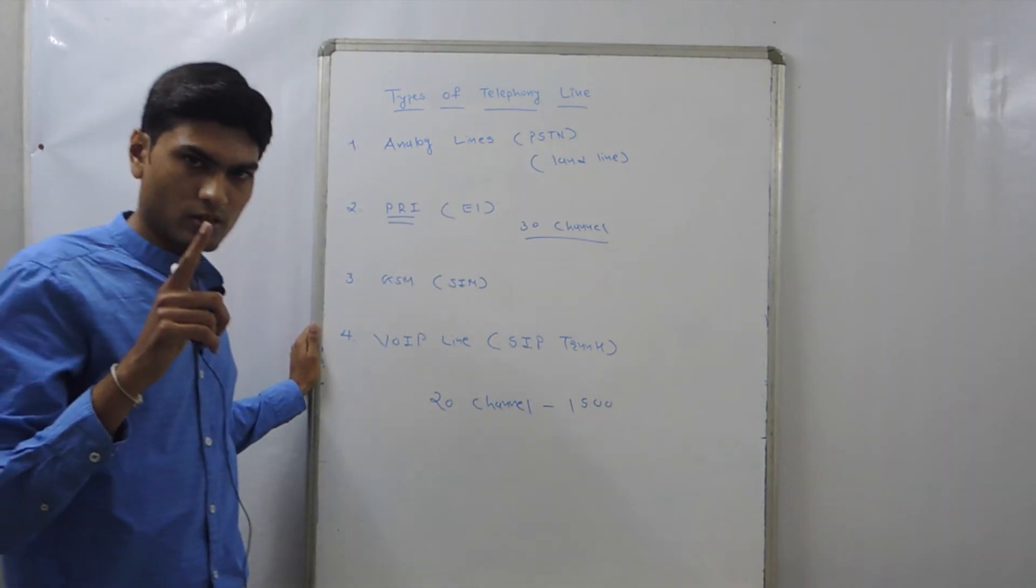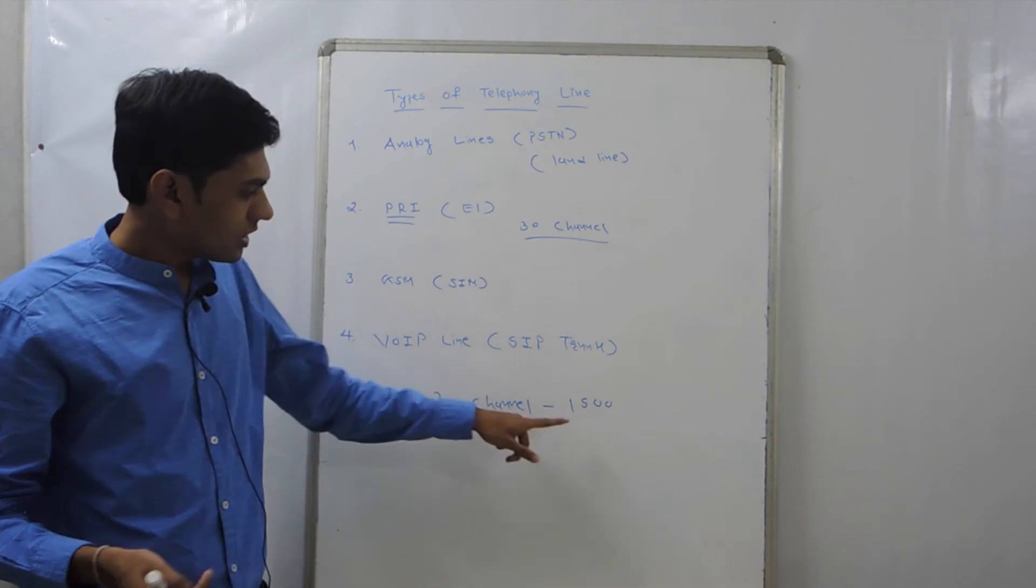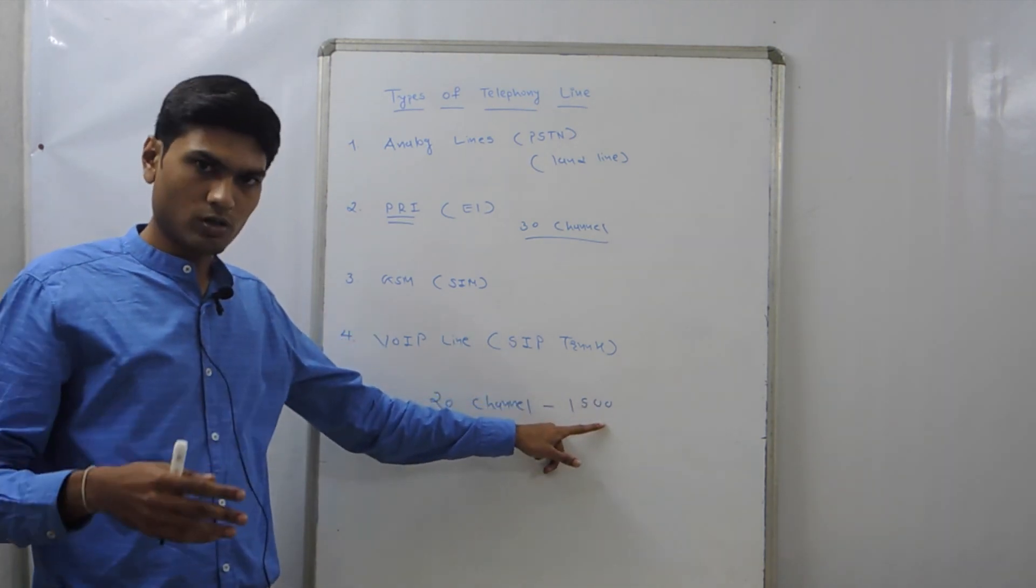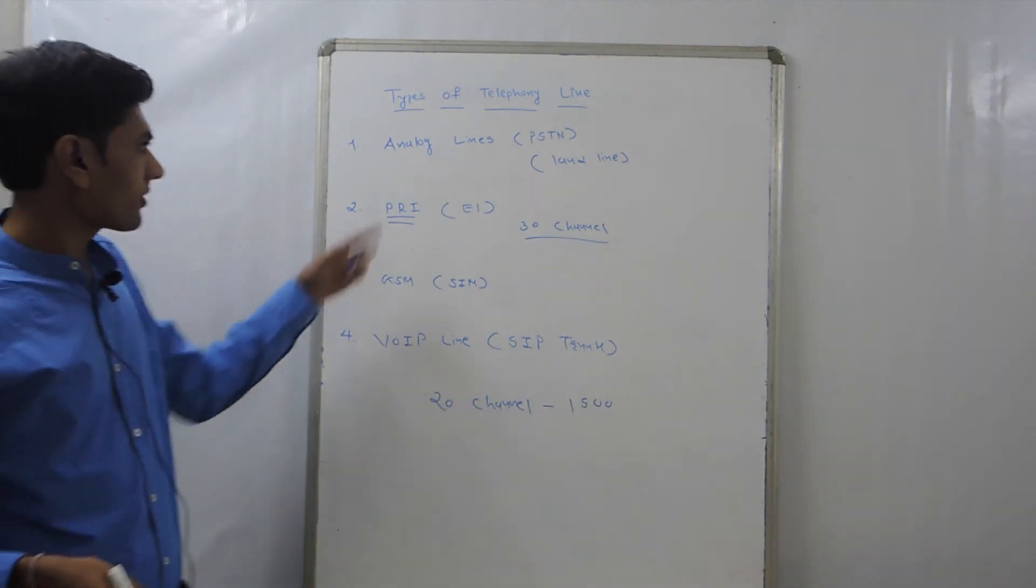So from one normal RJ45 cable, you can make 1500 simultaneous calls from a single cable.